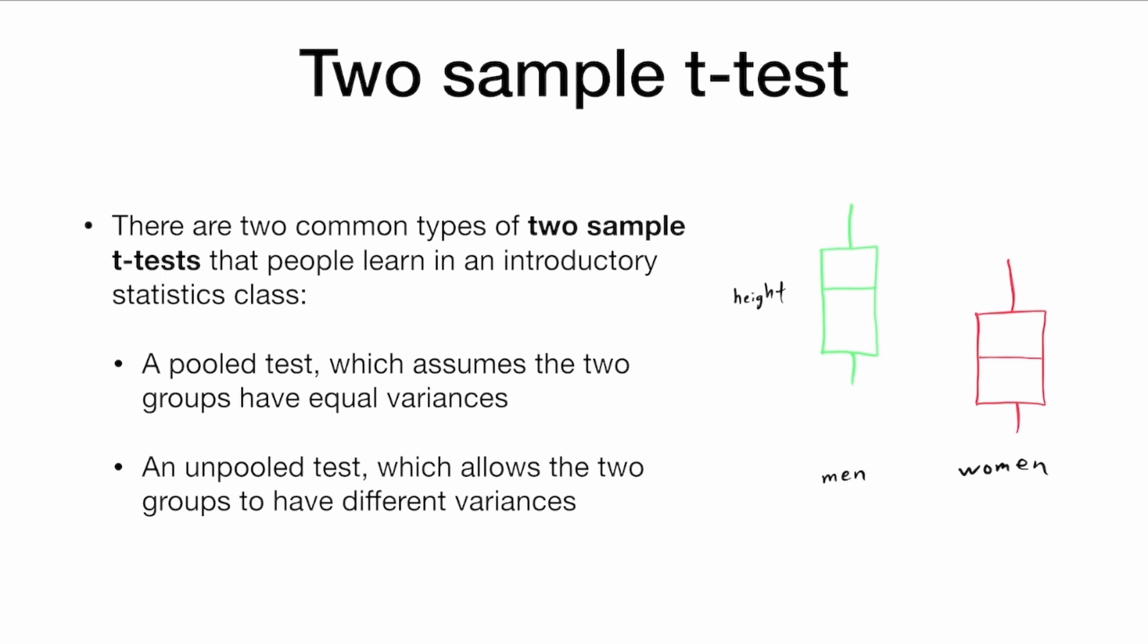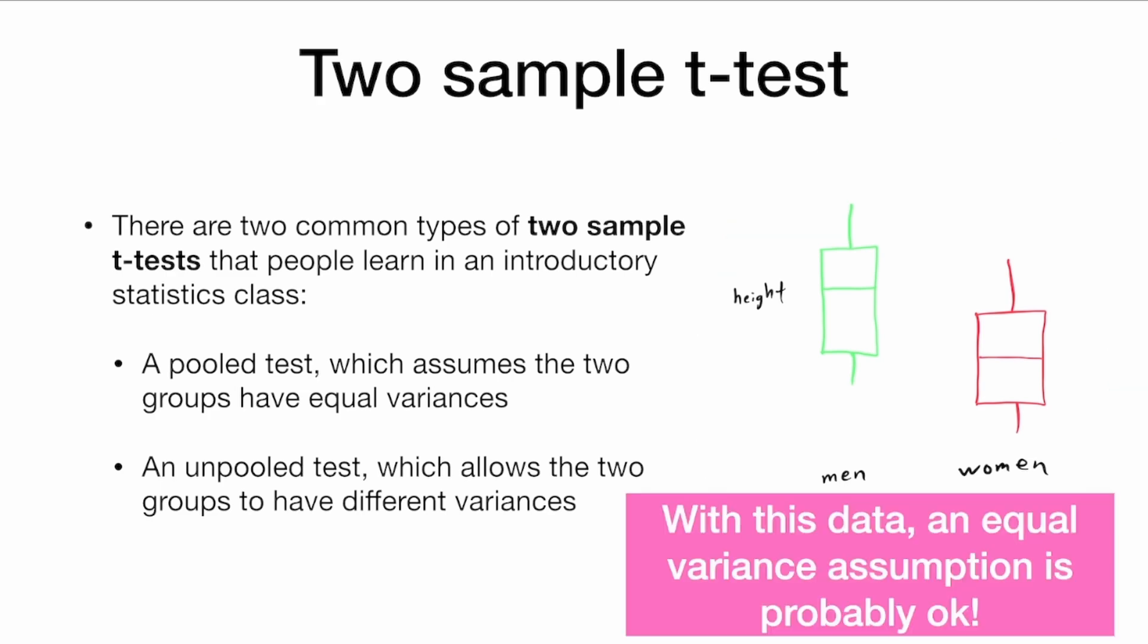So if we see this data on the right, we see that the two groups, men and women, have approximately equal variances. With this data, an equal variance assumption is probably okay.